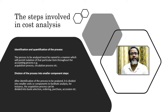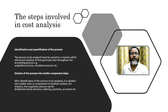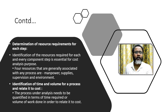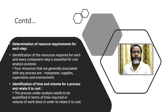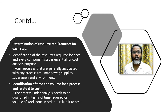The subsystems under these systems — under the circulation system and under the acquisition system — are to be analyzed. Both things are part of cost analysis or cost-benefit analysis. The determination of resource requirements involves identifying resources for each component. Four resources are generally associated: manpower, raw materials, supplies, and supervision along with the work environment.